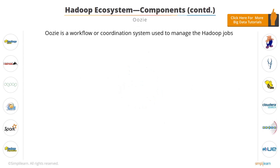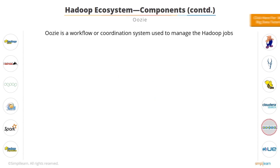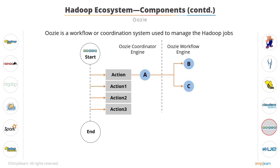Hadoop jobs such as MapReduce, Pig, Hive, and Sqoop have workflows. Oozie is a workflow or coordination system that you can use to manage these Hadoop jobs. Multiple actions occur between the start and end of the Oozie workflow, as shown in the diagram.